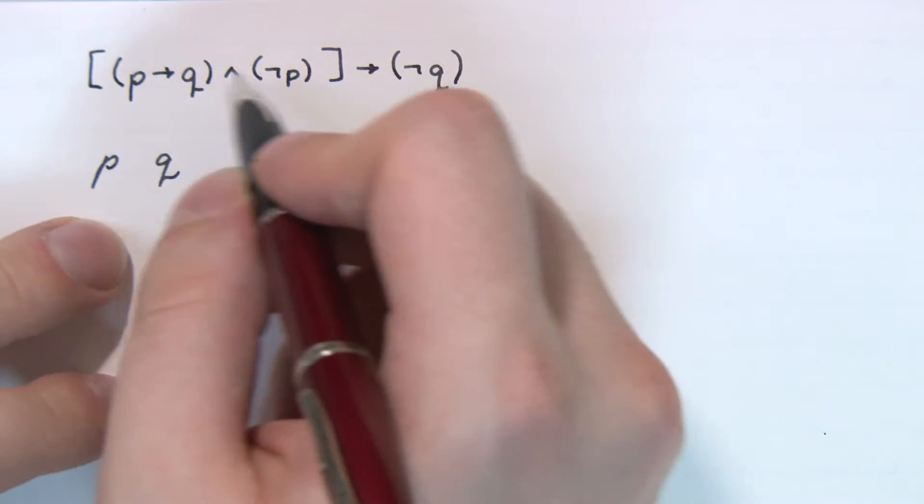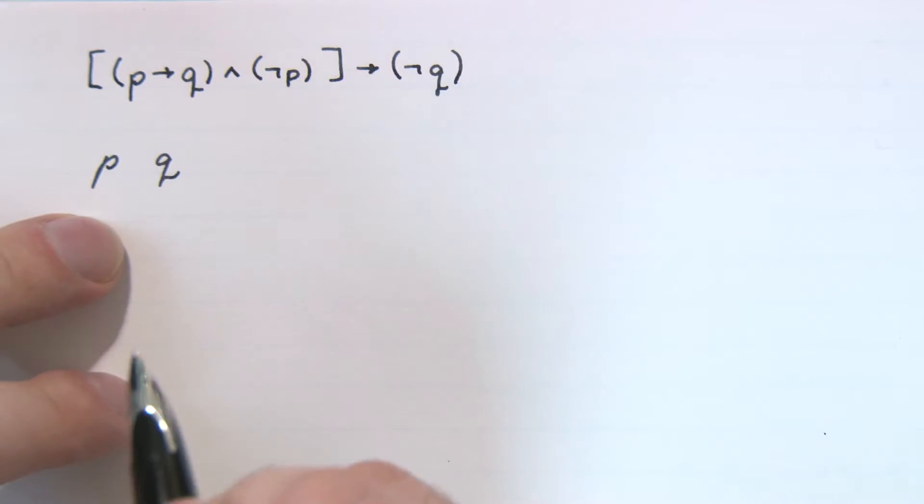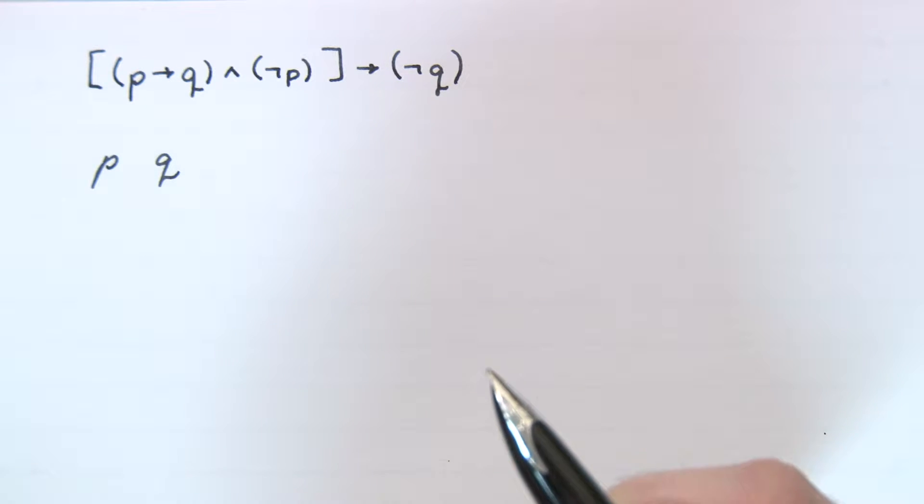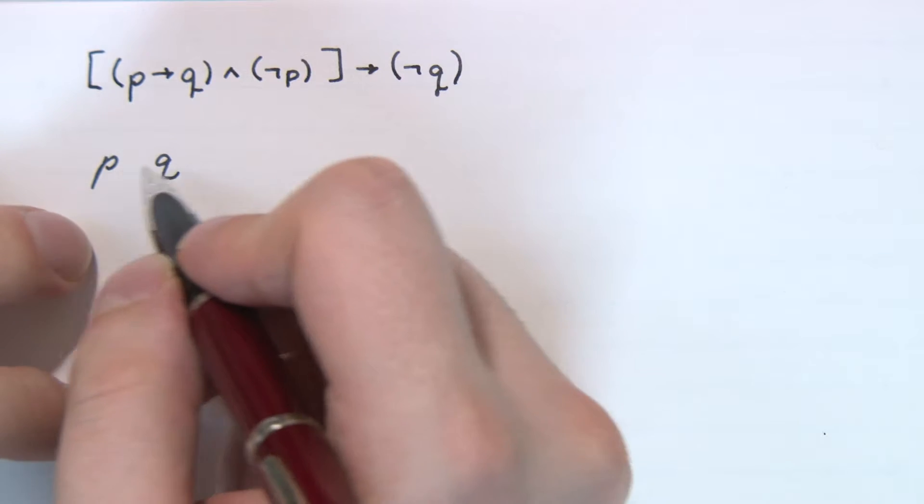So we start. We got P and Q, so we got 2 to the 2, which equals 4. We're going to have 4 lines in our truth table. We have P and Q.